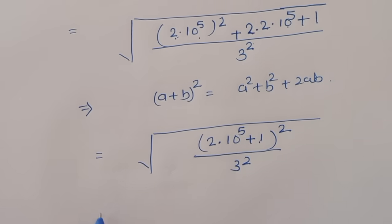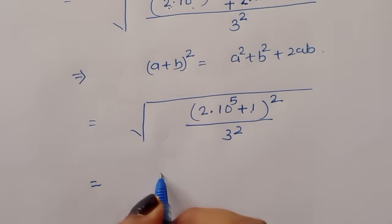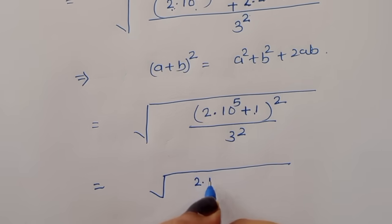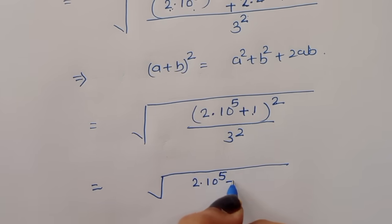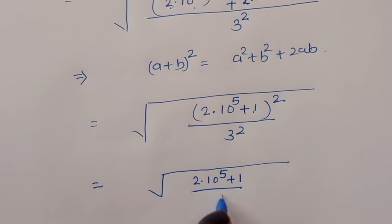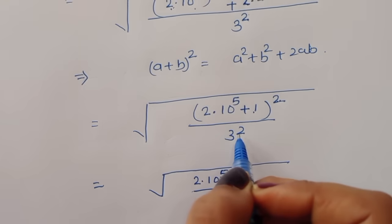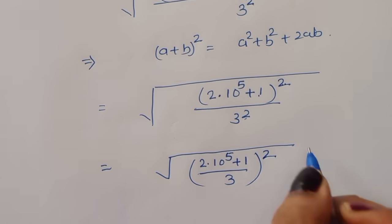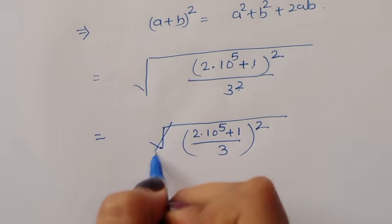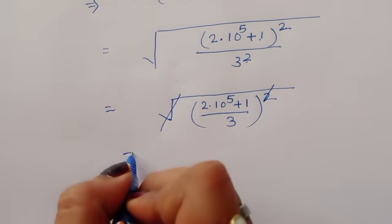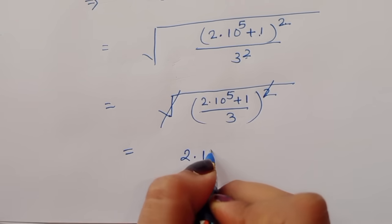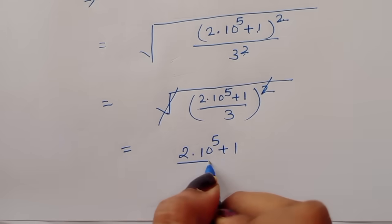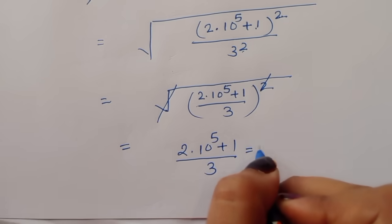So this is equal to the square root of (2 times 10 raised to 5 plus 1) whole squared divided by 3 squared. The square root cancels with the square, giving us 2 times 10 raised to 5 plus 1 divided by 3.